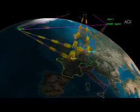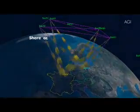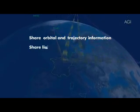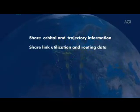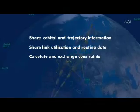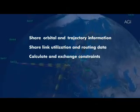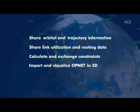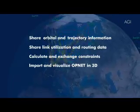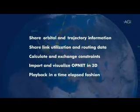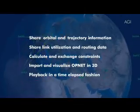By combining simulation technologies, OpNet and AGI are now able to share orbital and trajectory information, share link utilization and routing data, calculate and exchange intervisibility and link status constraints, import and visualize OpNet-generated communication systems in 3D, and play back the simulation in a time-elapsed fashion.